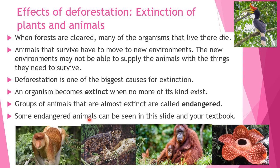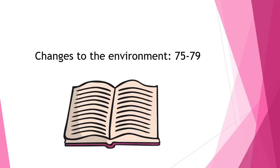Some endangered animals can be seen in this slide and your textbook. This one is the proboscis monkey, the orangutan, the rafflesia, the rhinoceros hornbill, and the last one — the Bornean clouded leopard. Anini sumua binatang anini endangered right now. For your exercise, can you do pages 75 to 79 of your workbook? Good luck, Year 6!